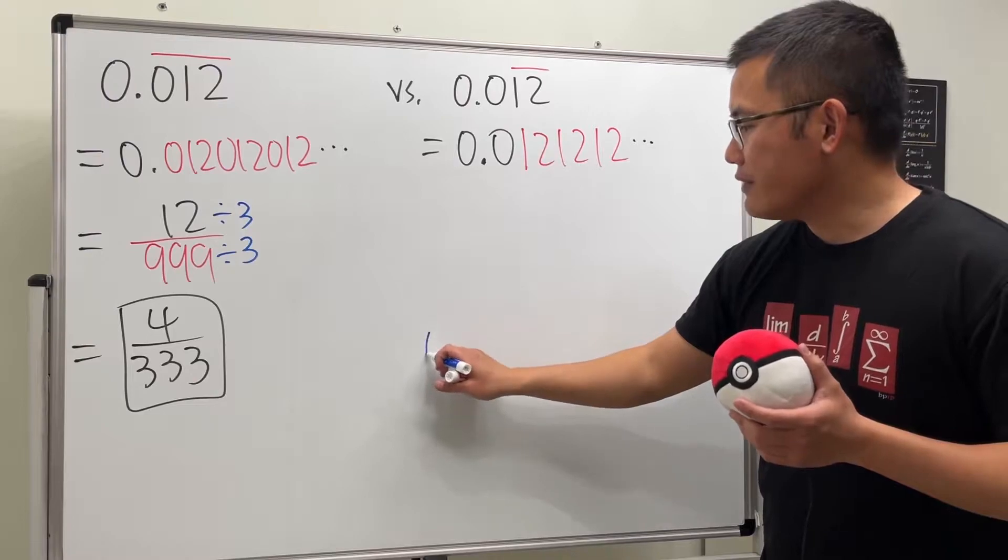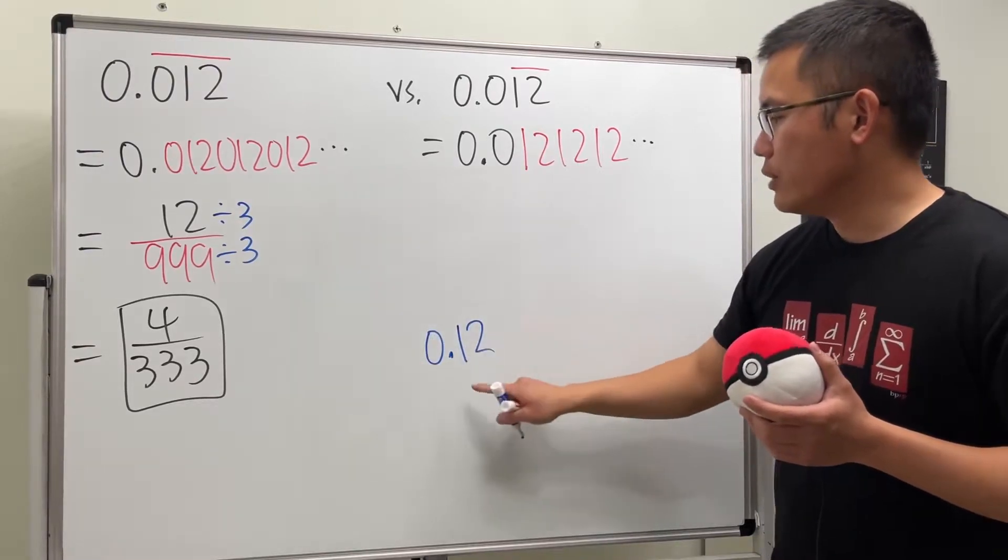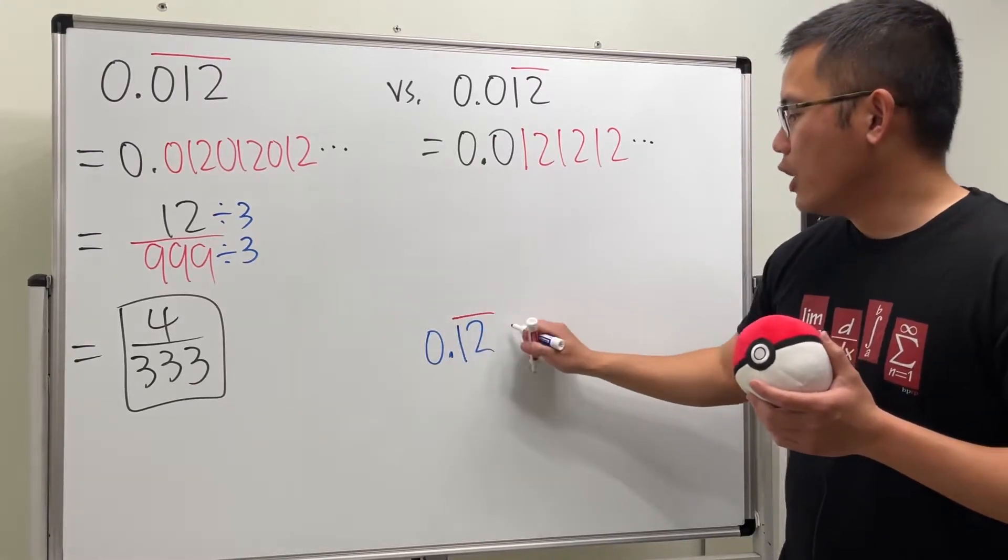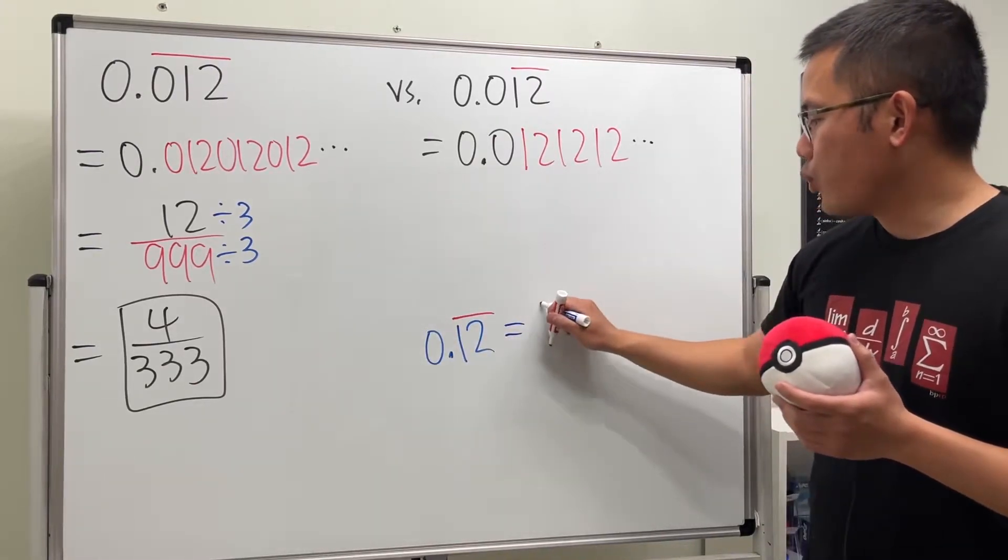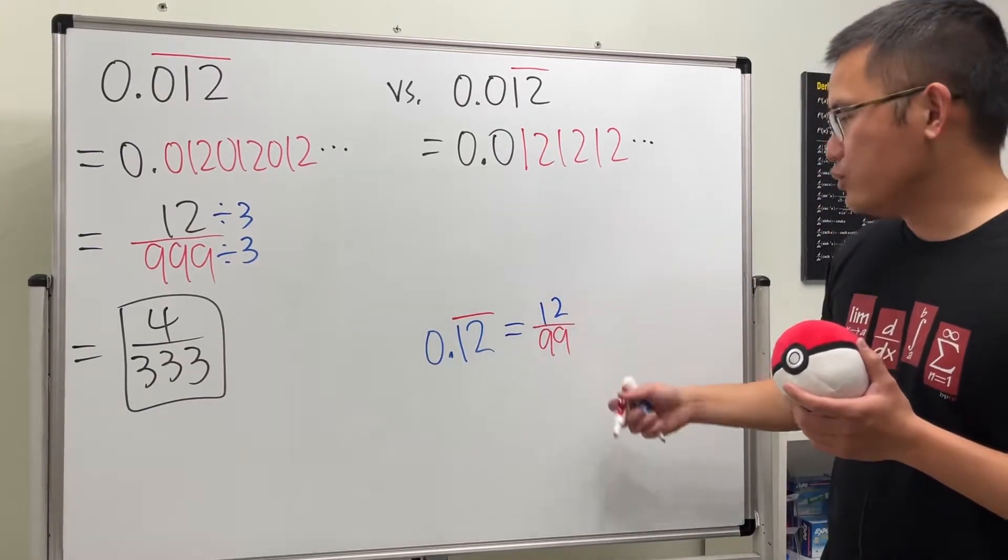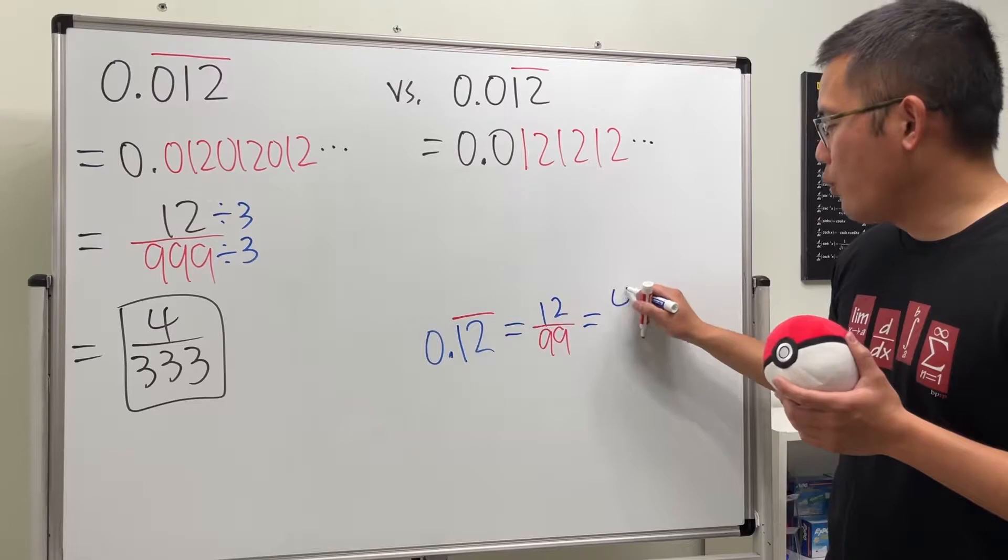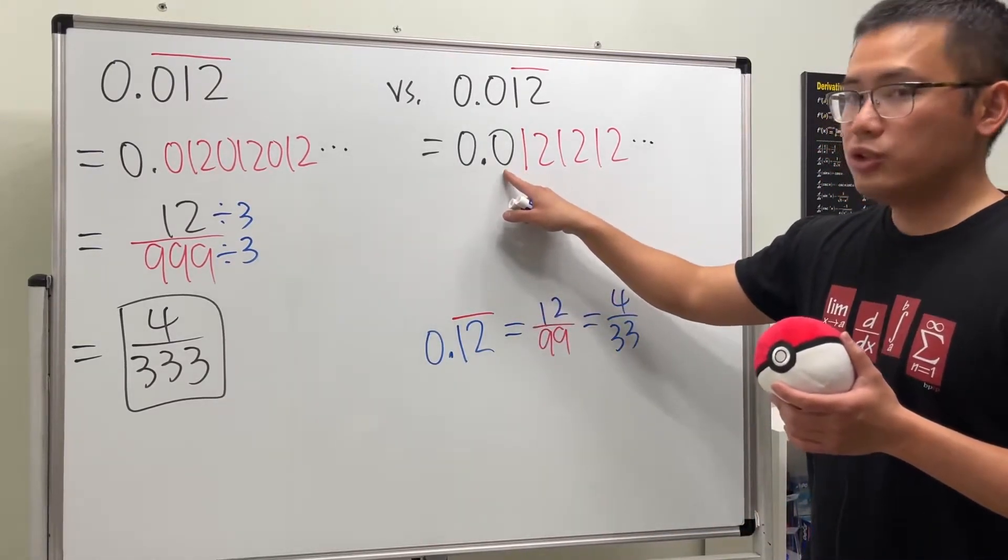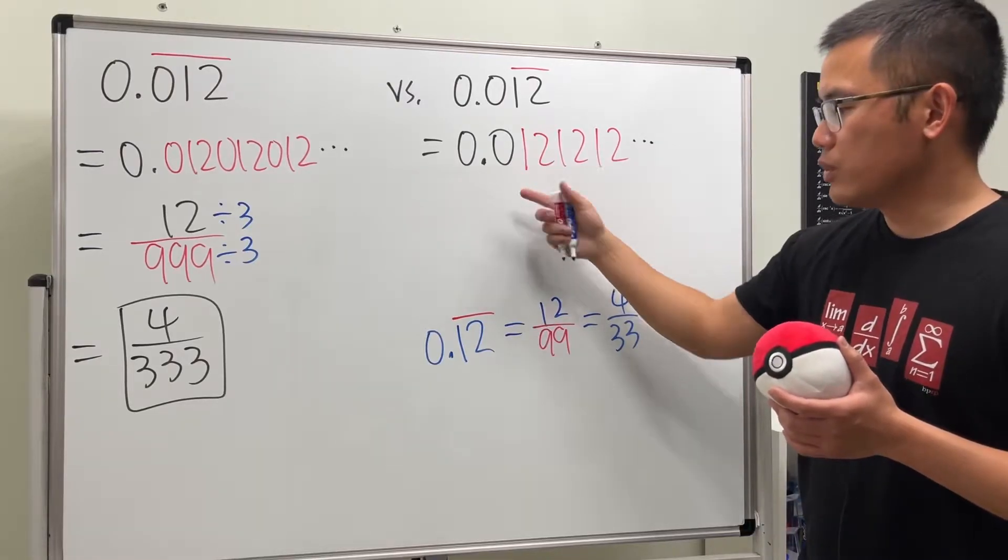So, imagine the following. If we only have 0.12̅ with the bar over, we can just write this down as 12 over 99. And then we can reduce this, and we will get 4 over 33. No problem on this. But we do have this additional 0. So, what do we do?